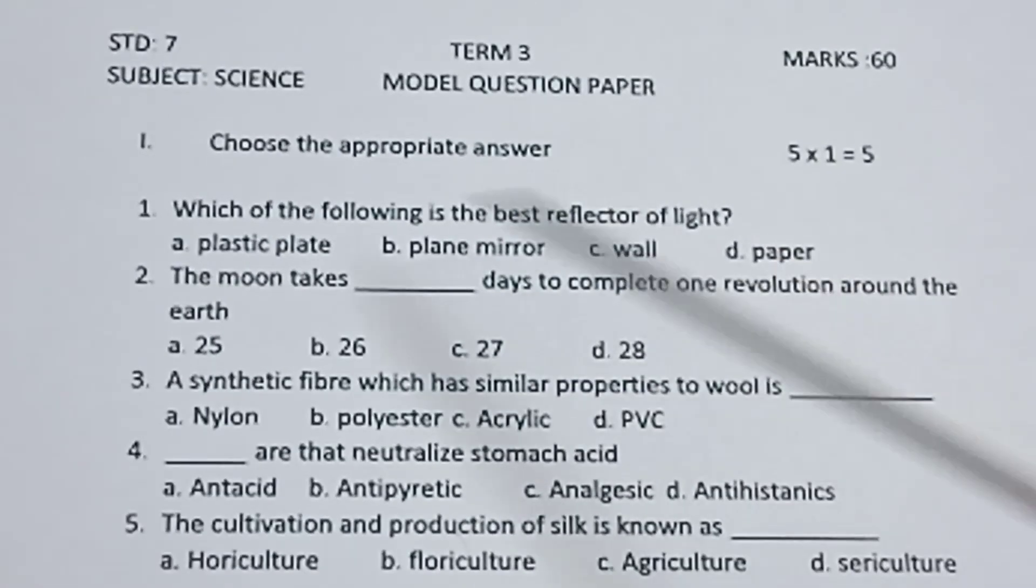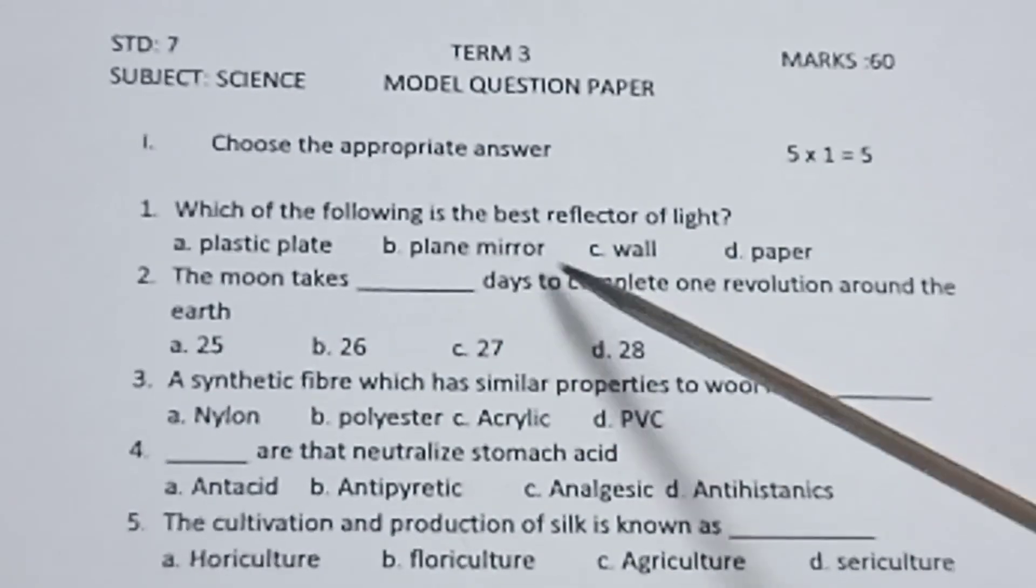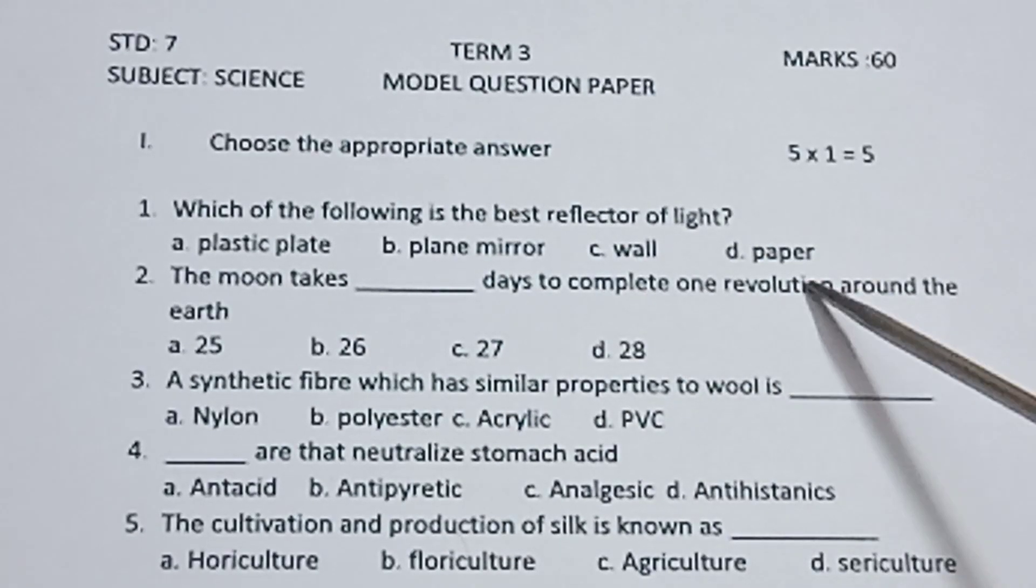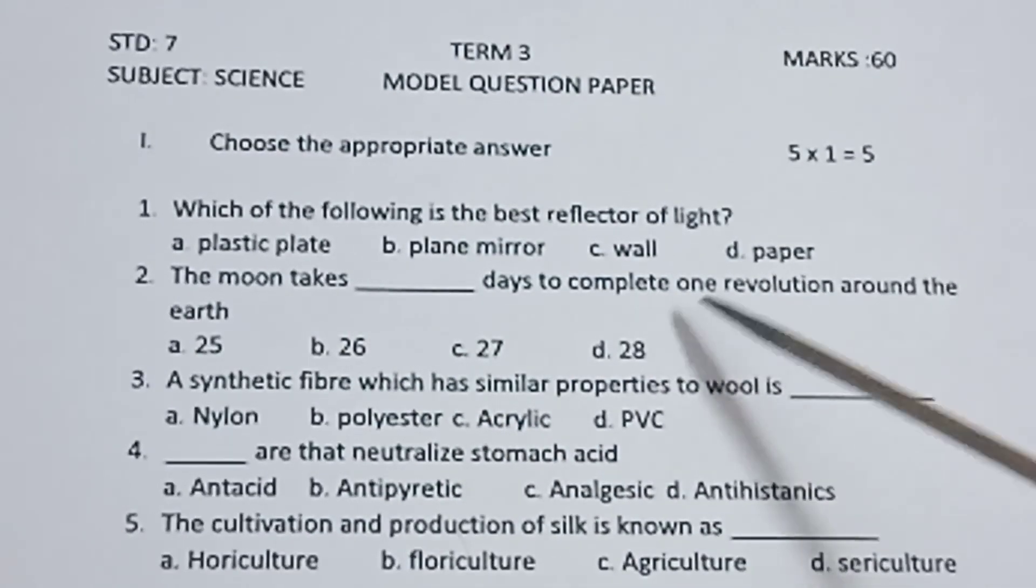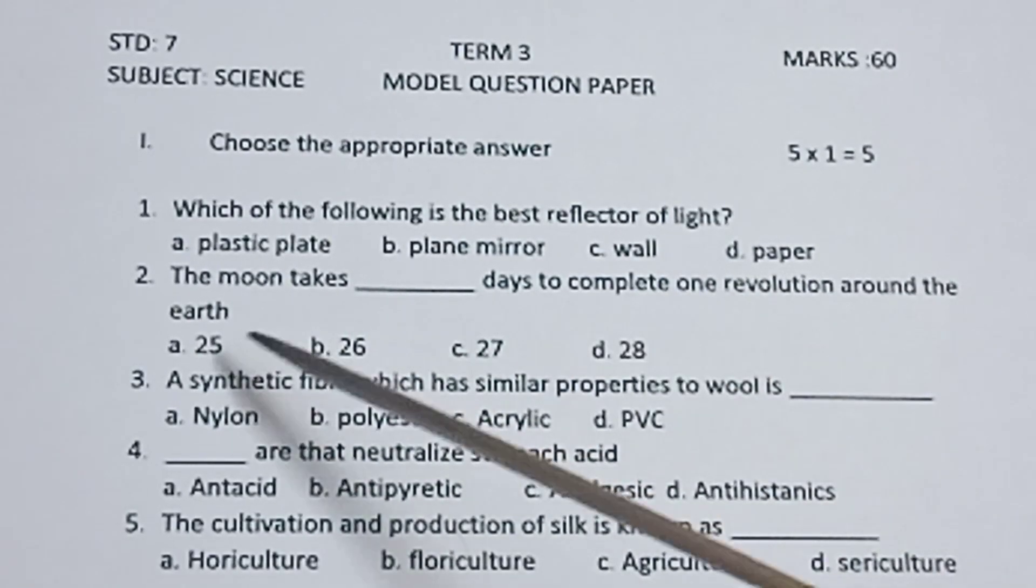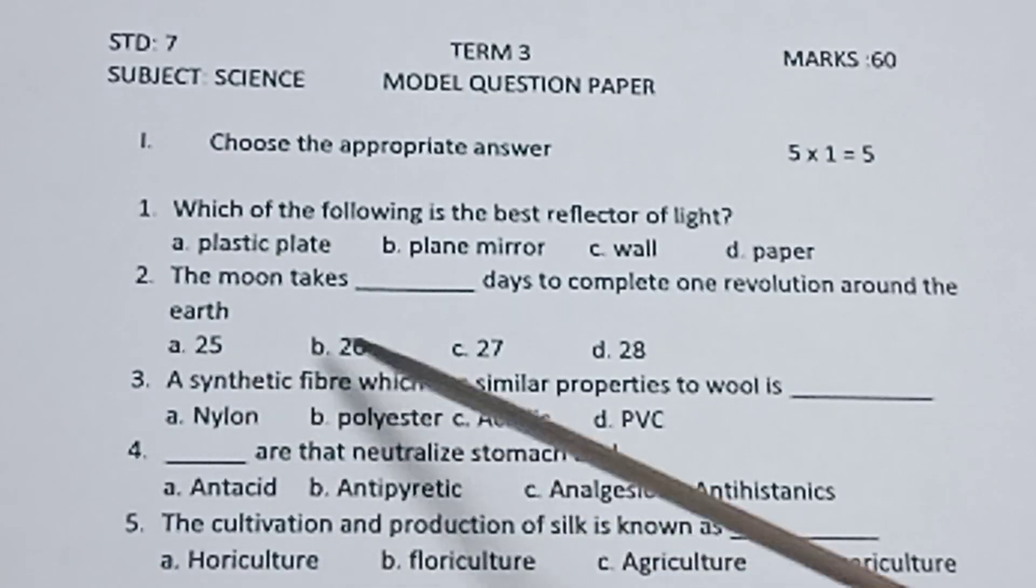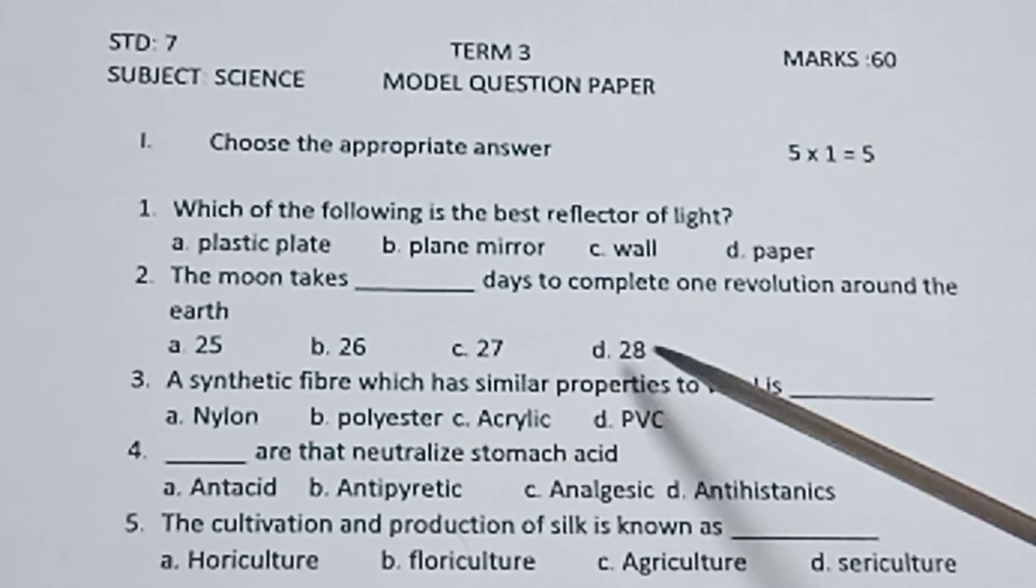Which of the following is the best reflector of light? There are four options there: plastic plate, plane mirror, wall, paper. Second one, the moon takes dash days to complete one revolution around the earth: 25, 26, 27, 28.